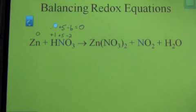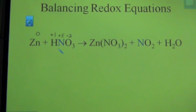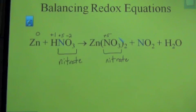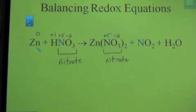Once you have assigned oxidation numbers for a polyatomic ion — in this case nitrate — those oxidation numbers do not change. So when you see nitrate on the product side, the oxidation number is once again +5 for nitrogen and −2 for oxygen. Anytime you see nitrate, it's going to be +5 and −2. And this zinc in the compound, unlike the free element, is going to be a +2 charge — that is the only charge zinc can exhibit.